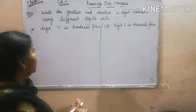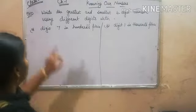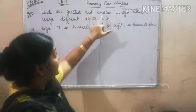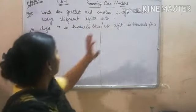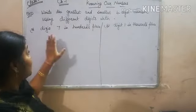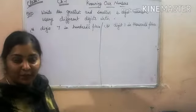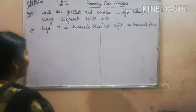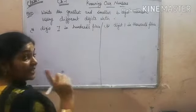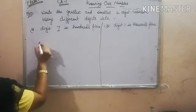In problem number 10, it is given that you have to write the greatest and smallest 4-digit number using different digits, with digit 7 in the 100s place. What they have fixed is that you have to use digit 7 in the 100s place.